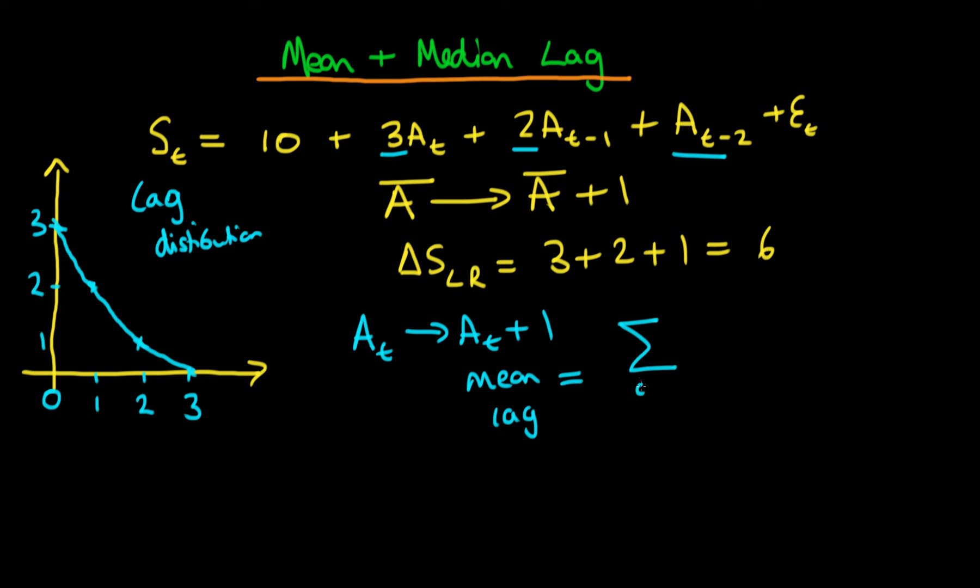The mean lag mathematically is defined as the sum from i equals 0 to the maximum number of lags, which in this circumstance is just 2, and the sum is summing over i times beta i, and we're dividing through by the sum of i equals 0 to 2 of beta i. And notice at the bottom here is just the definition of the long run effect on sales.